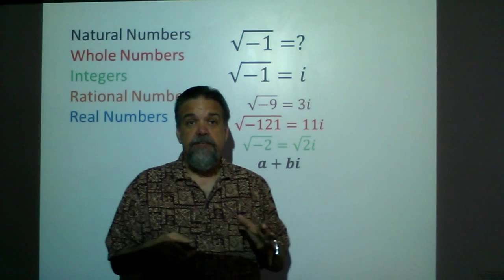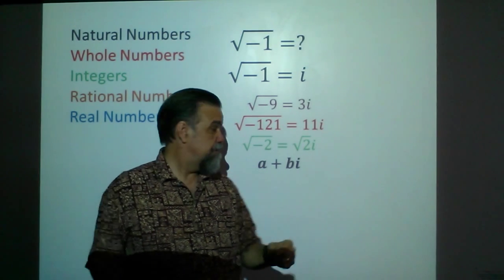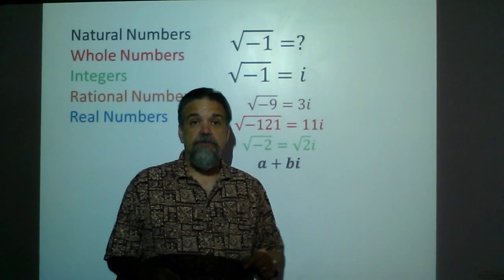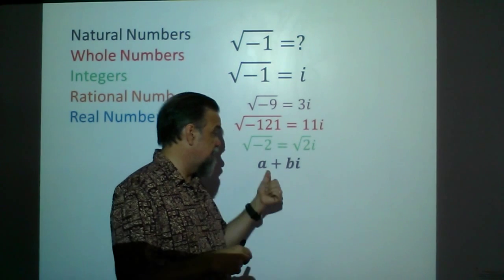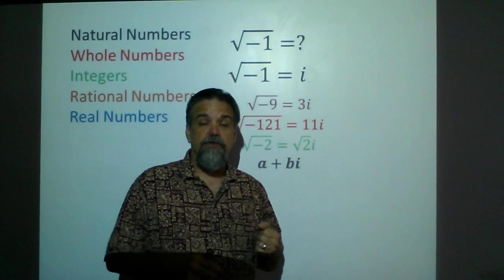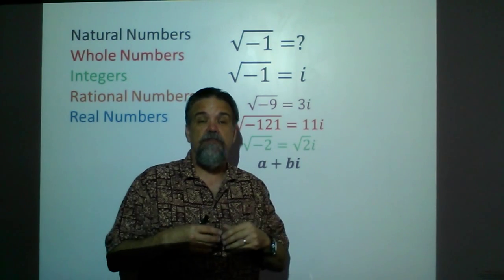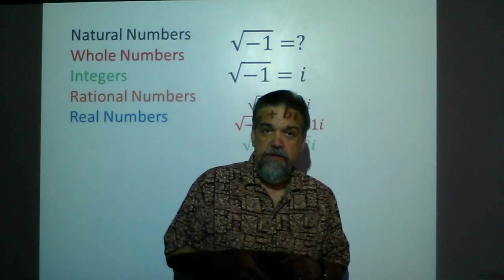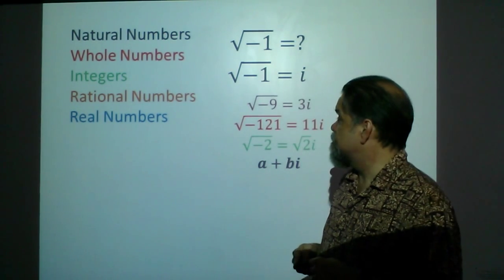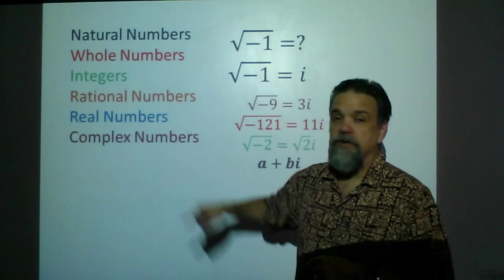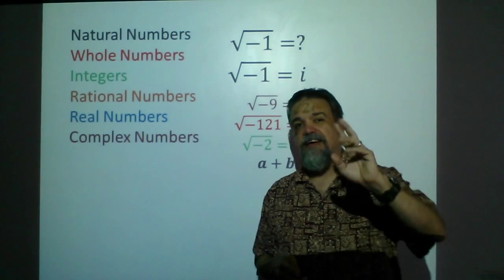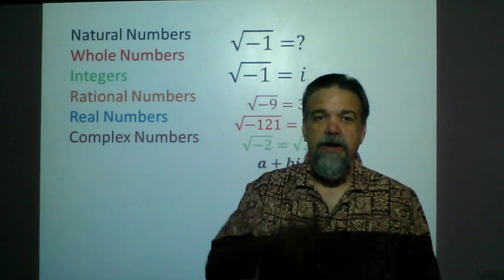Complex numbers include all of the real numbers — just make the b part zero. Complex numbers also include all of the imaginary numbers — just make the a part zero. And complex numbers include all possible sums of real and imaginary numbers. So those are the complex numbers. We're going to be talking more about complex numbers in a later video. For now, bye-bye.